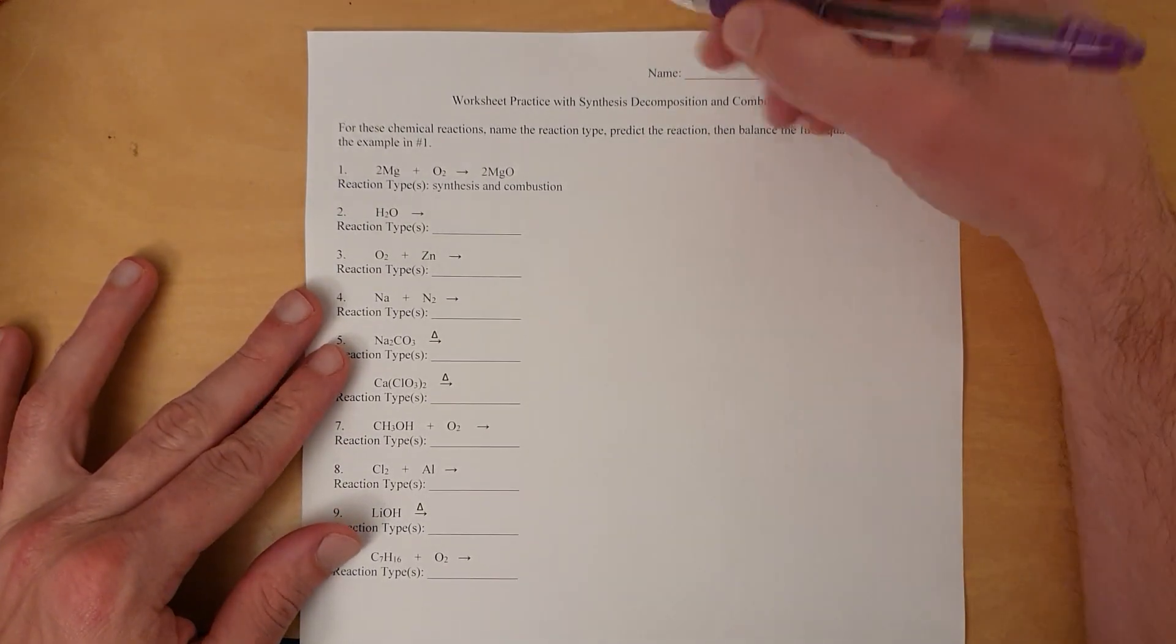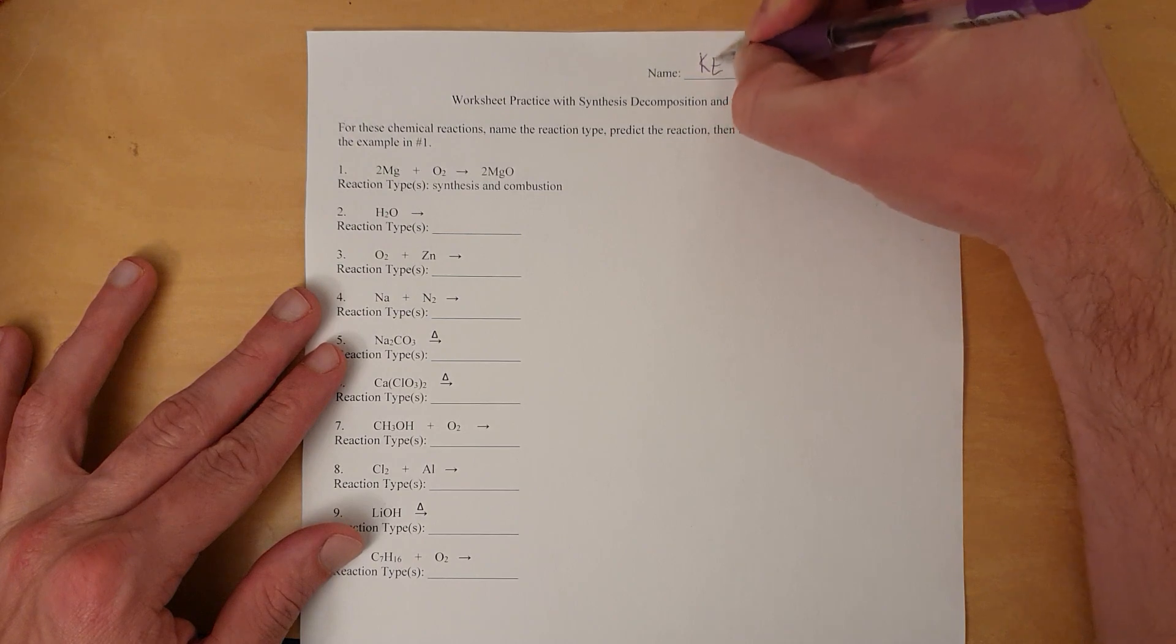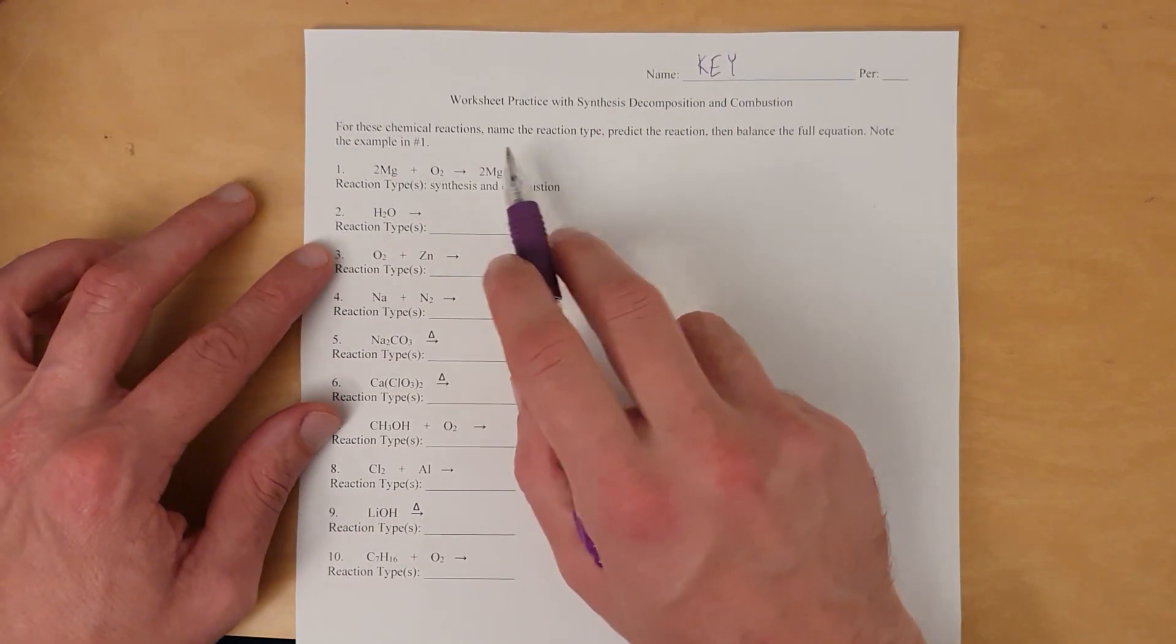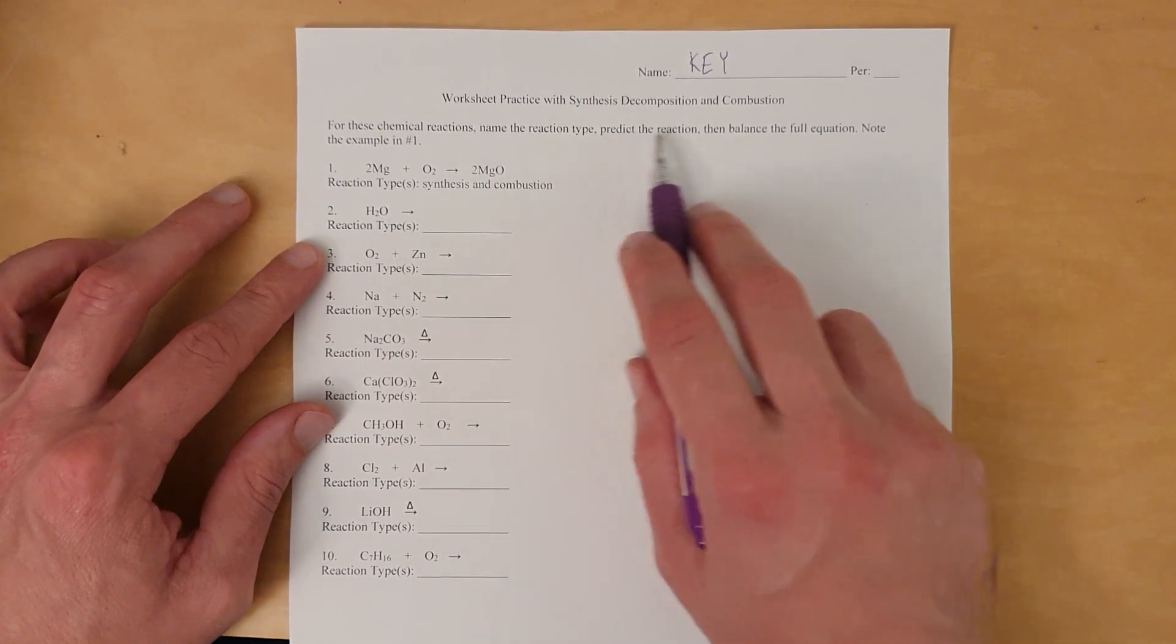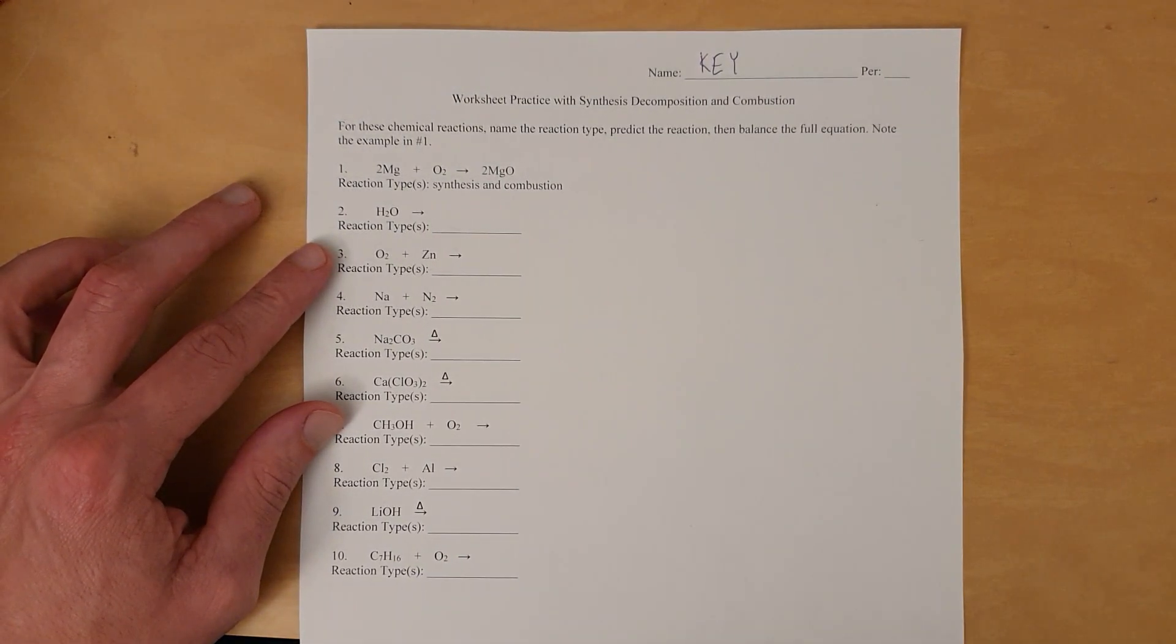Okay, let's talk about how you handle reactions involving synthesis, decomposition, and combustion. So that means we're going to do the naming the reaction type, predicting what happens, and then balancing the full reaction.